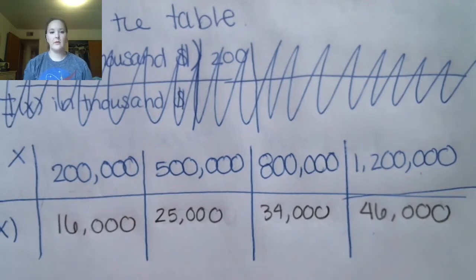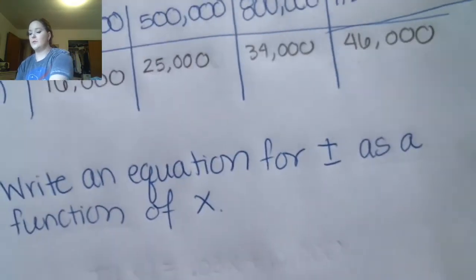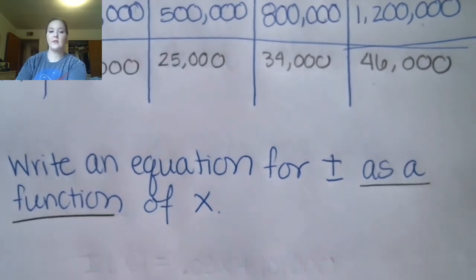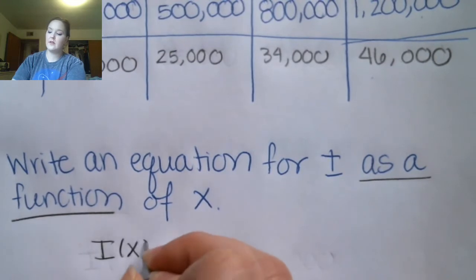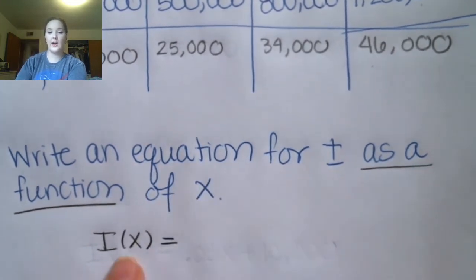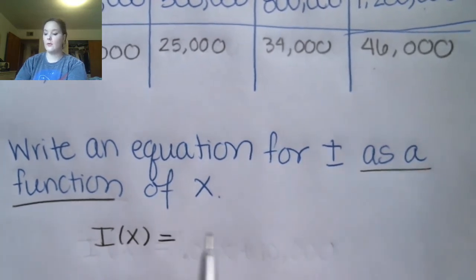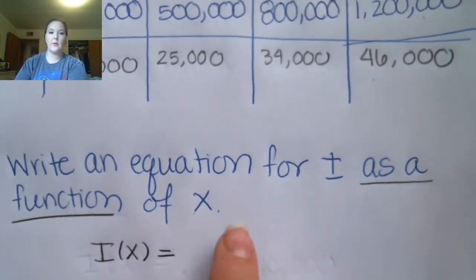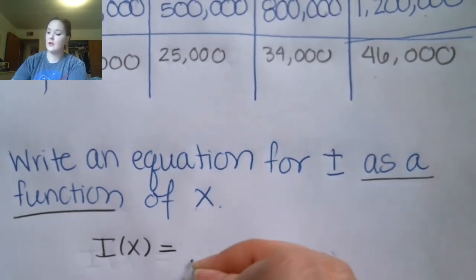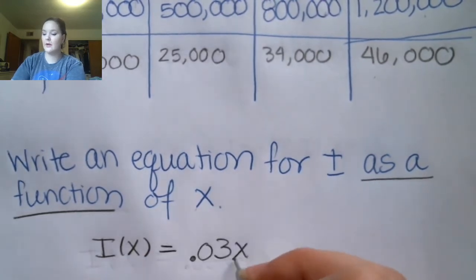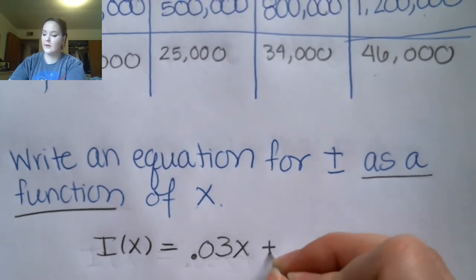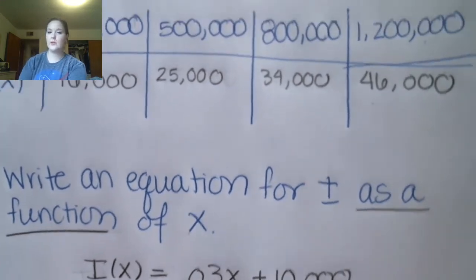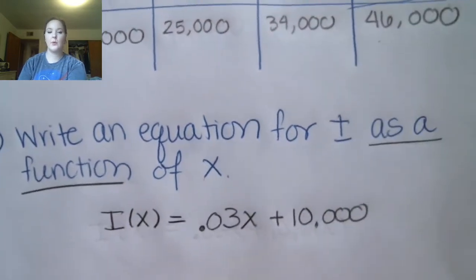Now we're going to write the equation for I as a function of x — here again is that signal phrase. So we write I of x equals, and on the right side we use only numerical values and the input value x. We think back to what we did with the numbers: the first thing we did was take 3%, so 0.03 times x, and then we added the base salary of 10,000. We're just mirroring that process symbolically.